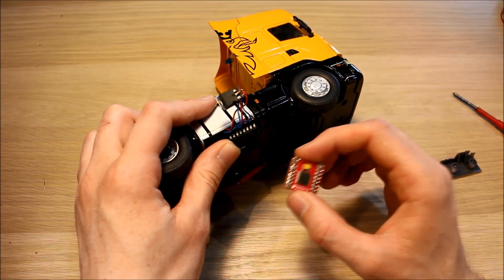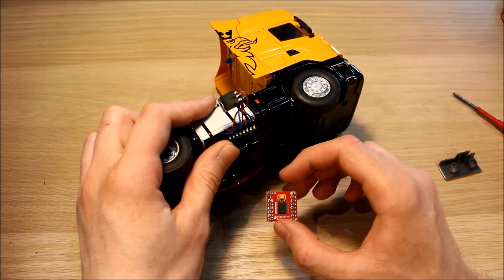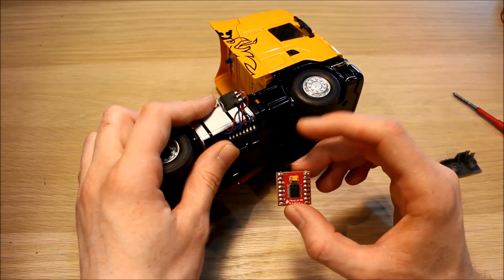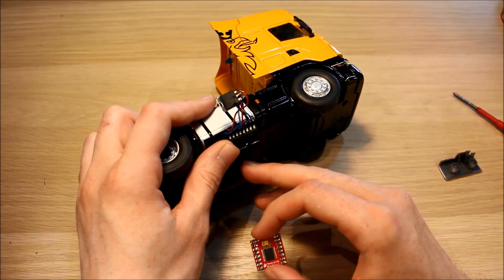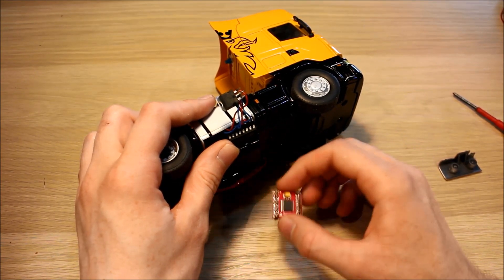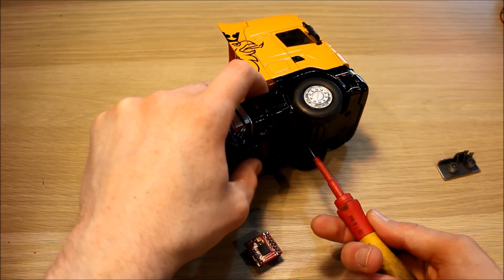That's really what we're testing today - whether this motor driver has a low enough voltage drop that we can drive this motor from 3.7 volts. There's another problem with this lorry: the LEDs, a lot of them are set up to work with the 7.4 volts.